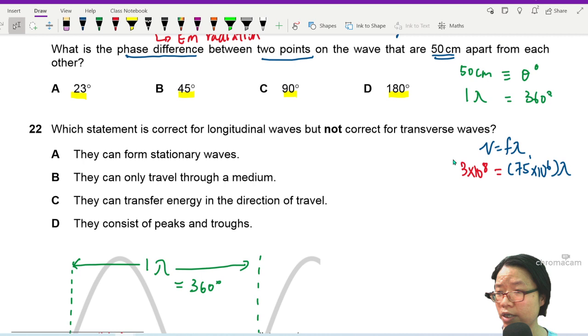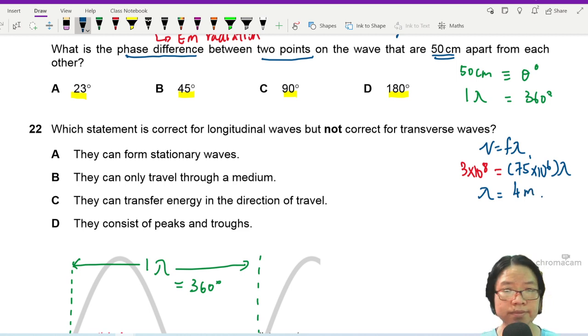From here, I can press my calculator to see that my lambda is 4 meters. So lambda is 4 meter or 400 cm.